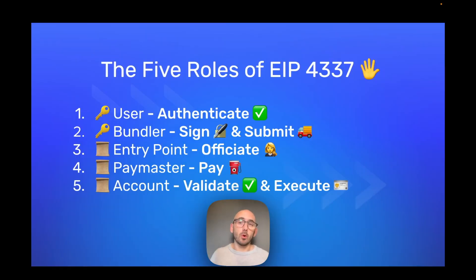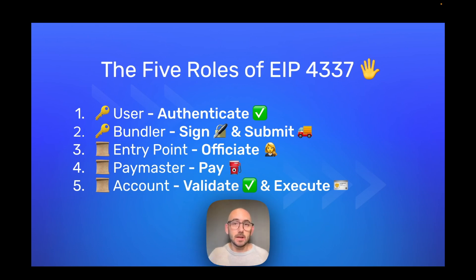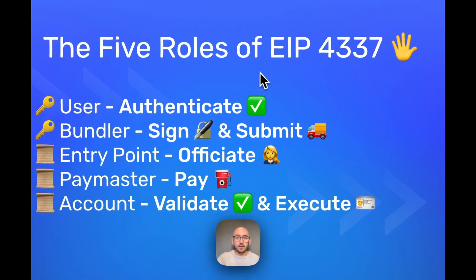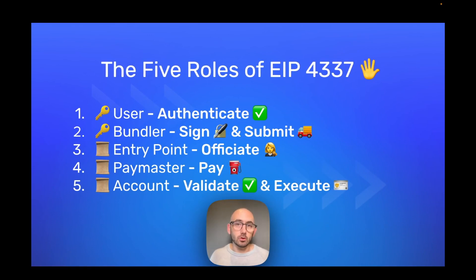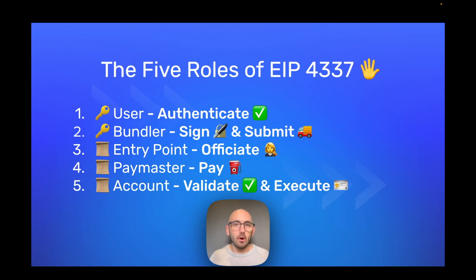Let's quickly sum this up. We have the five roles of EIP 4337: the user, the bundler, the entry point, the paymaster, and the account. The user authenticates the transaction — they sign something which the account will later validate on-chain to confirm this user is allowed to transact on its behalf. The bundler signs the actual transaction wrapper around the operation and submits it on-chain, acting like an externally owned account in the traditional web3 sense.